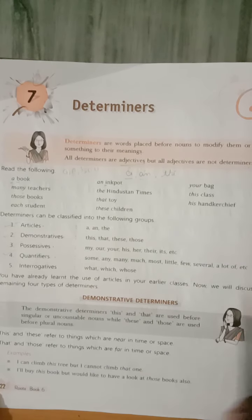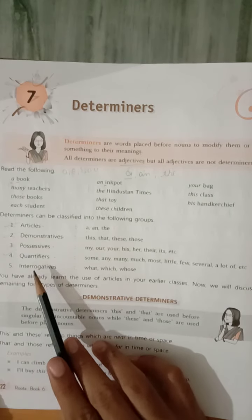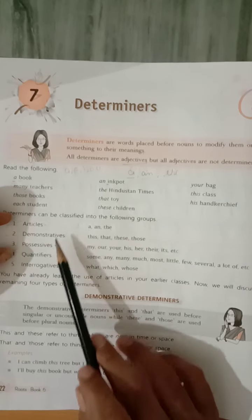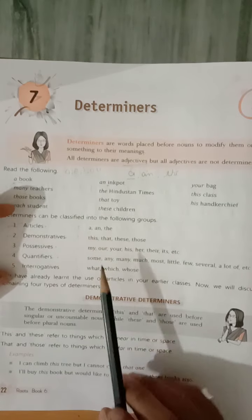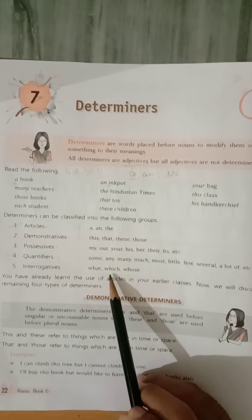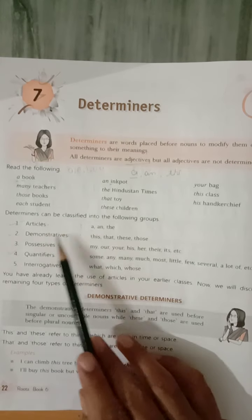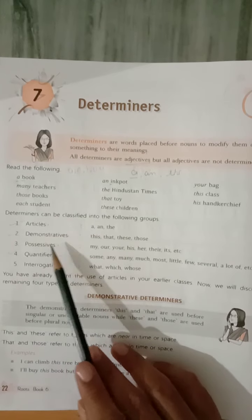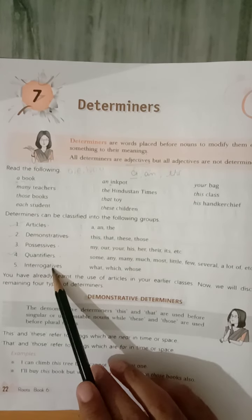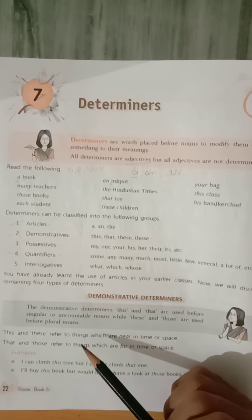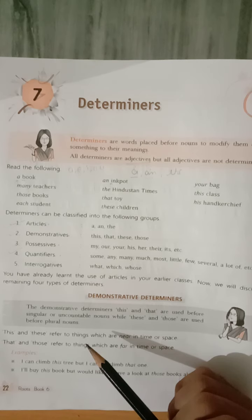After that, these four types can also be further classified. The classification includes: articles, demonstrative, possessive, quantifiers, and also interrogative. Regarding sentences, there are four types: declarative, interrogative, imperative, and exclamatory.